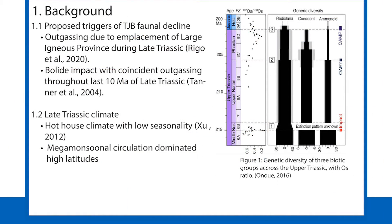The late Triassic was a time of low faunal diversity and was marked by one of the five worst mass extinctions in the geologic record. Possible triggers of the mass extinction and the faunal decline at the end of the Triassic are extreme outgassing events from the emplacement of large igneous provinces and the eruption of flood basalts.